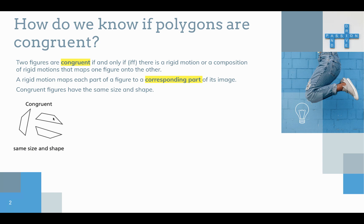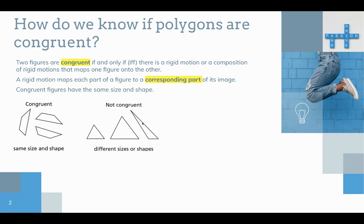For example, you could translate this a little bit and reflect it, translate it some more. With this one, you could simply rotate it and translate it, and they would map onto each other. These shapes are not congruent — clearly you can see that they are different sizes or shapes.